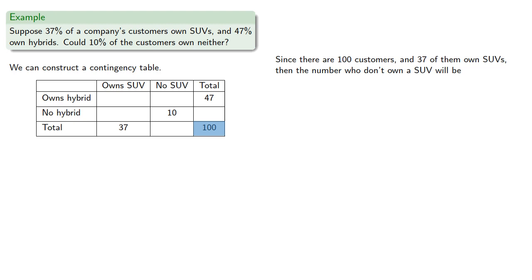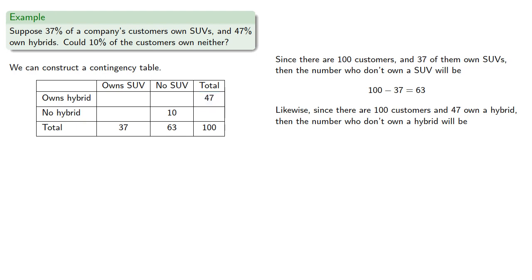Since there are 100 customers, and 37 of them own SUVs, then the number who don't own an SUV will be 63. Likewise, since there are 100 customers, and 47 own a hybrid, then the number who don't own a hybrid will be 53.